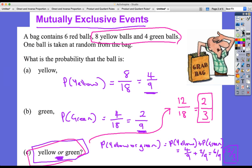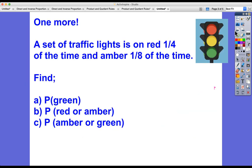So that's nice. Final question. Hopefully this is nice and straightforward. It's this word 'or' that basically means that you take into account two different categories of things. One more then: we've got a set of traffic lights, it's on red a quarter of the time.